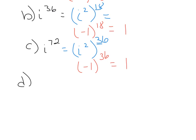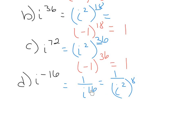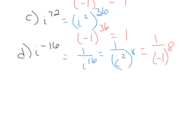Letter D says i to the negative 16 power. A negative exponent means the reciprocal, so this becomes 1 over i to the 16th power. Then we simplify: i to the 16 equals i squared to the 8th power. i squared is negative 1, so this is 1 over negative 1 to the 8th power. Negative 1 to the 8th power is 1, so 1 over 1 equals 1.